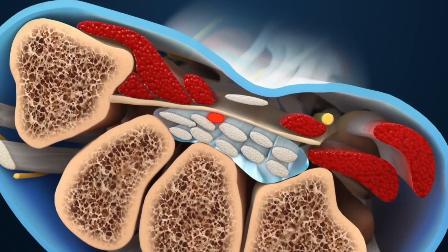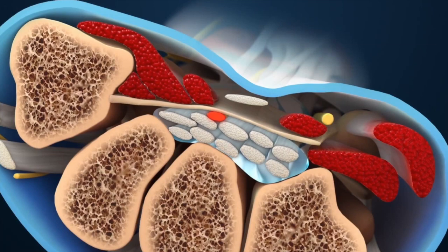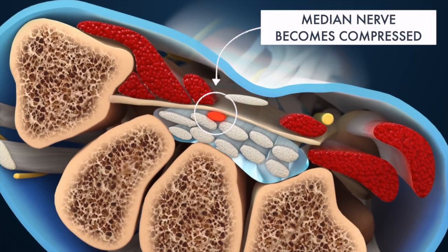Because these boundaries are very rigid, the carpal tunnel has little capacity to stretch. Carpal tunnel syndrome occurs when the median nerve becomes compressed.